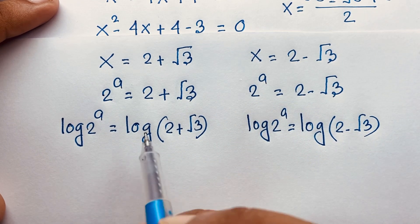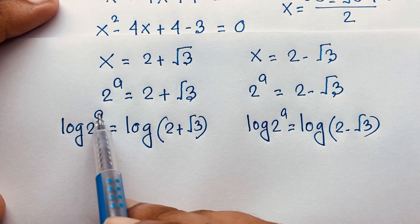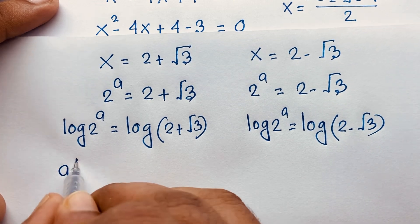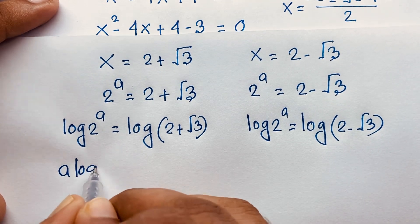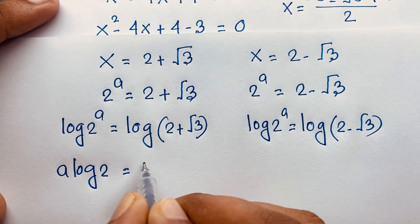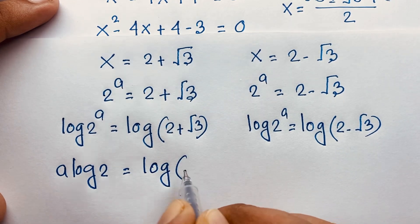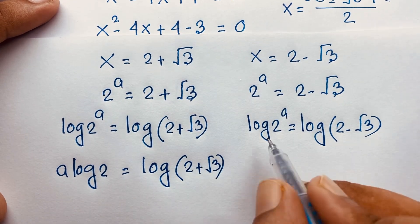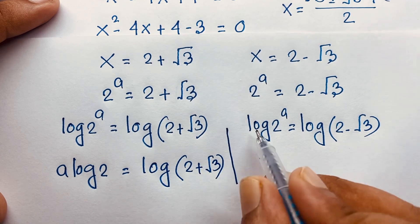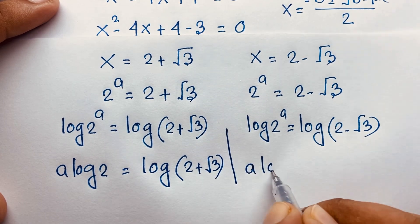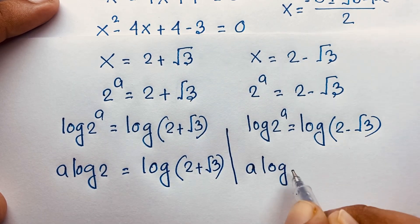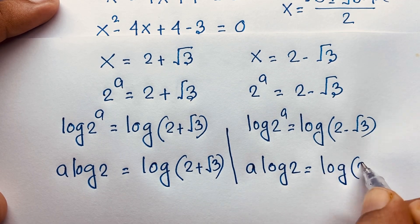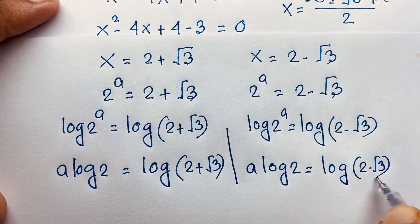According to the natural log formula, the exponent moves to the front. So a times log 2 equals log(2 plus square root 3), and a times log 2 equals log(2 minus square root 3).